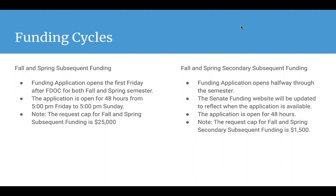Halfway through the semester we're going to have the fall and spring secondary subsequent funding. This application will open about halfway through the semester and will be updated on the Senate funding website. The application is also open for 48 hours. The request cap for fall and spring secondary subsequent funding is $1,500.